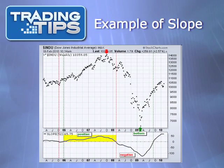Each day, these slope values are plotted on a line that typically appears beneath a stock's chart. Here is an example. Notice how the slope values fluctuate from positive to negative — that is, above 0 to below 0.